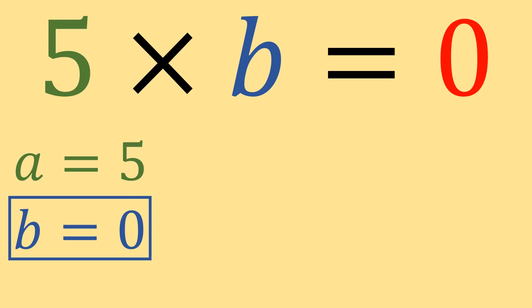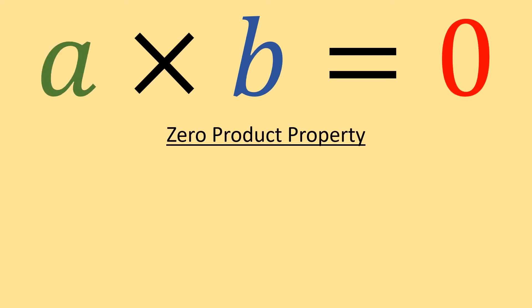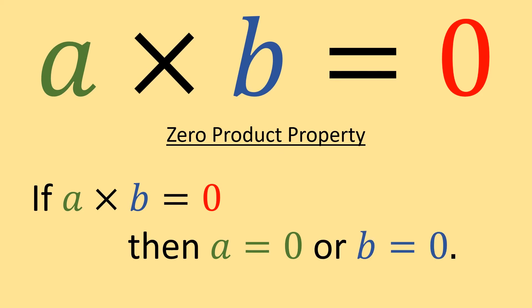And this brings us to the zero product property, which for two terms is if a times b equals zero, then a equals zero, or b equals zero.